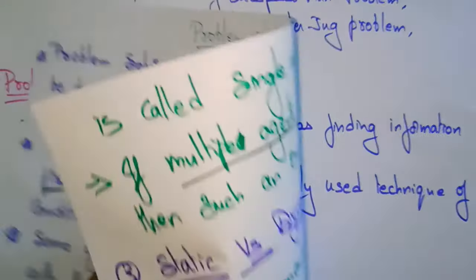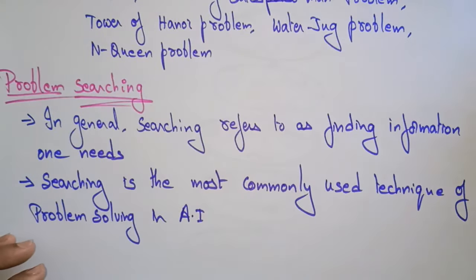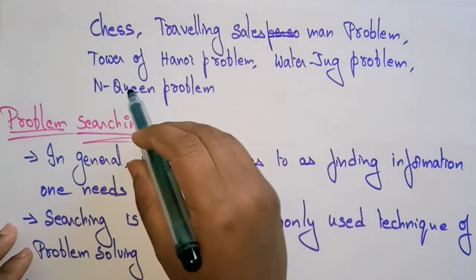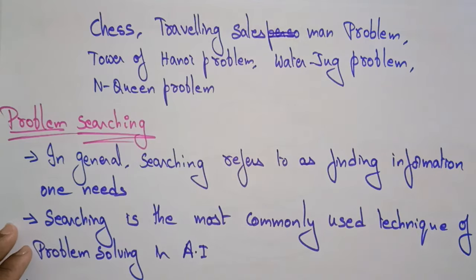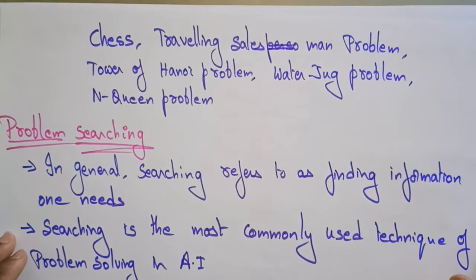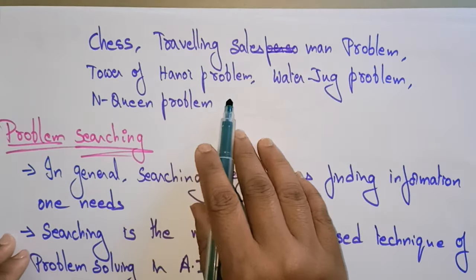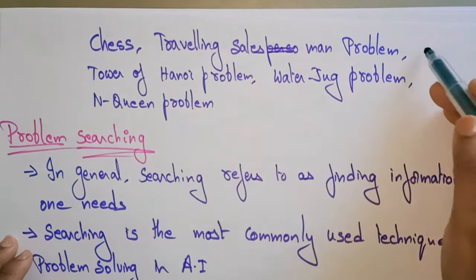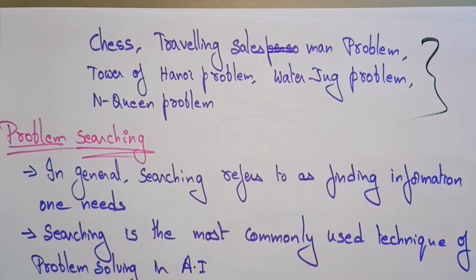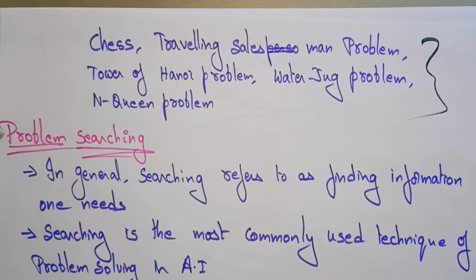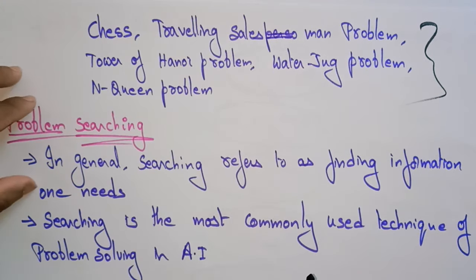Some of the most popular problem-solving examples using artificial intelligence include chess, the Traveling Salesman Problem, Towers of Hanoi, the Water Jug problem, and the N-Queens problem. These are all well-known problem-solving techniques based on artificial intelligence.